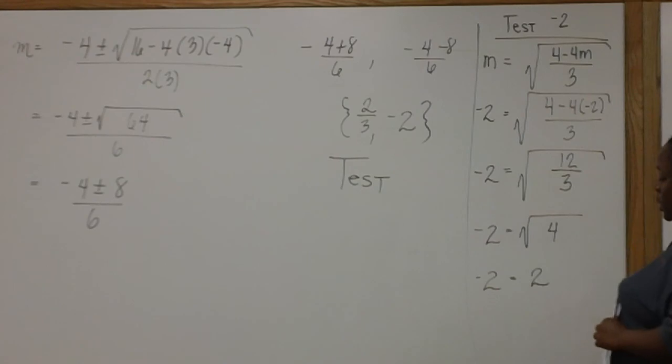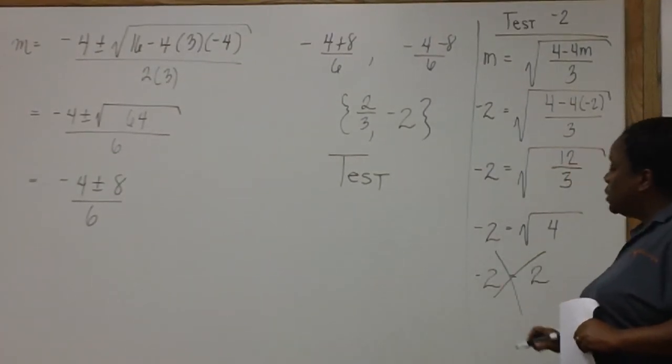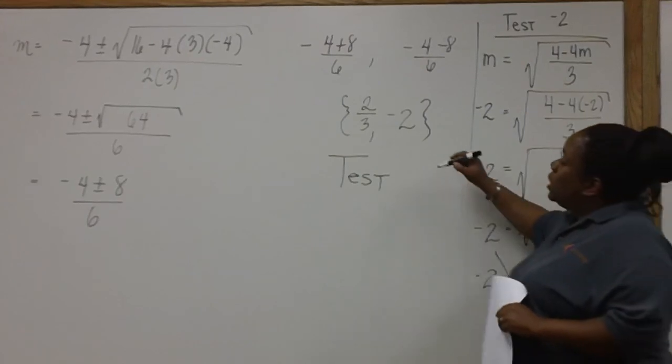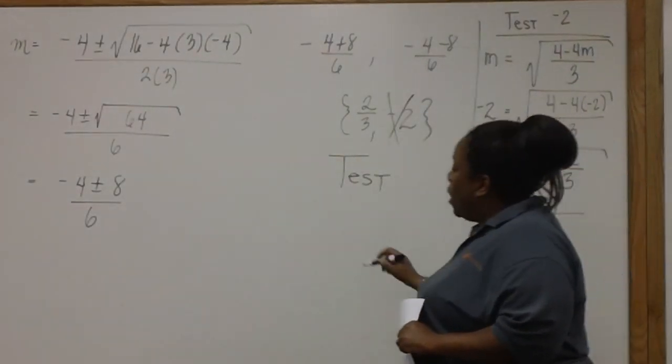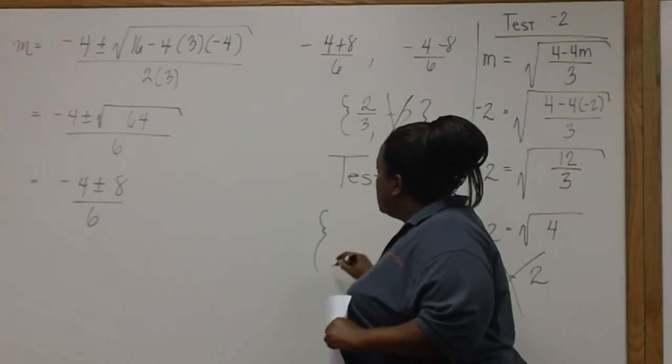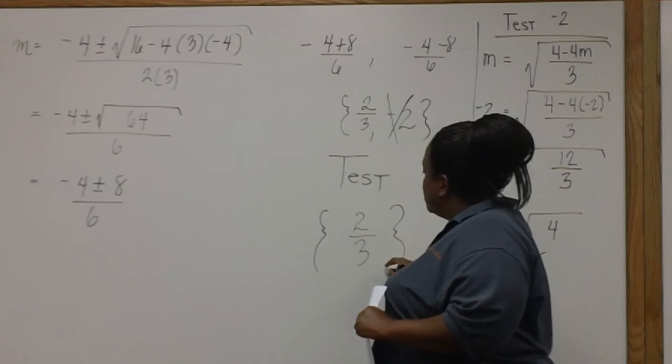So we end up with negative 2 equals positive 2, which is a false statement, which means that negative 2 is not part of our solution set. Our solution set consists only of 2 thirds. Thank you.